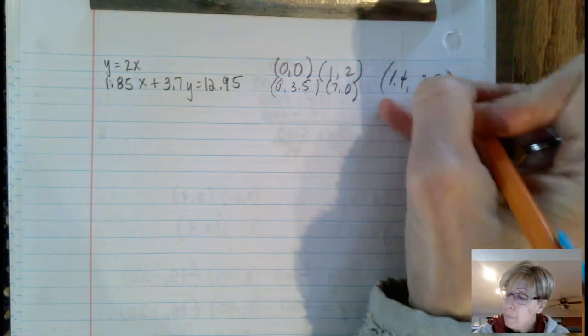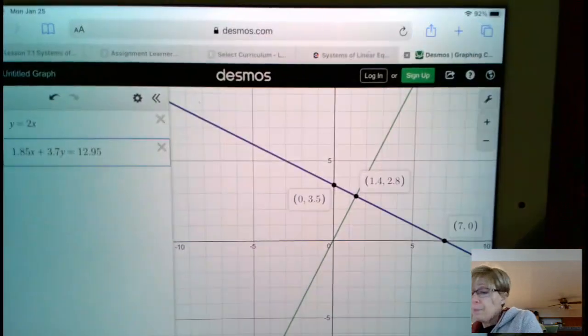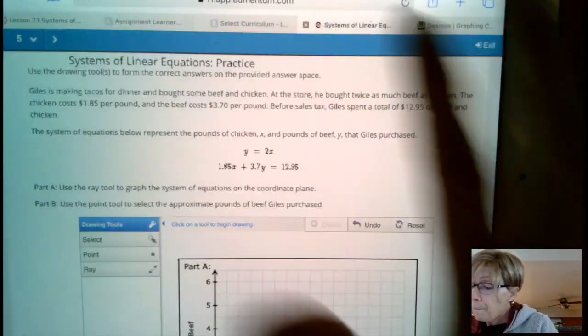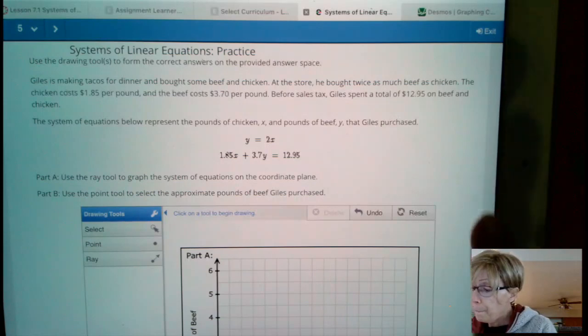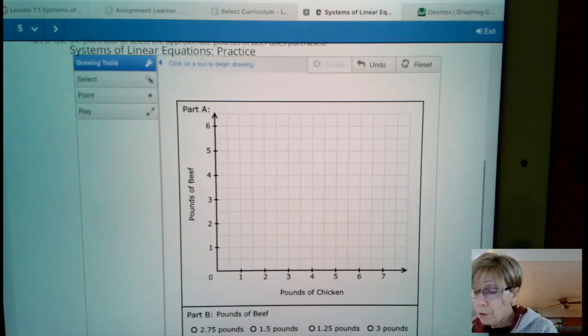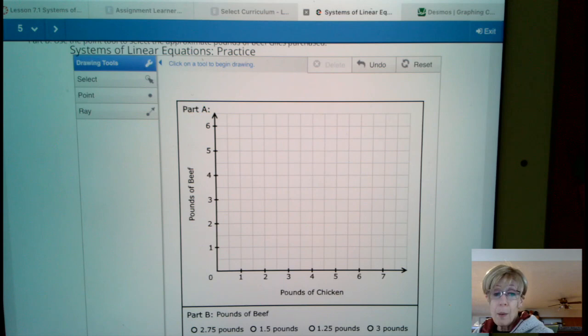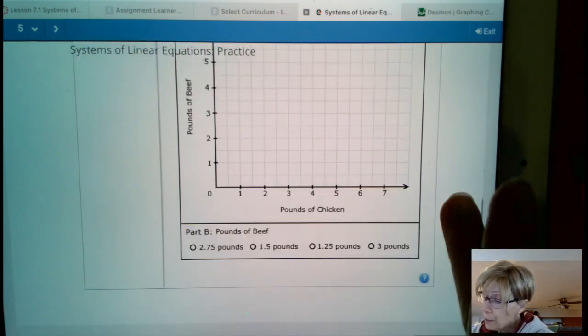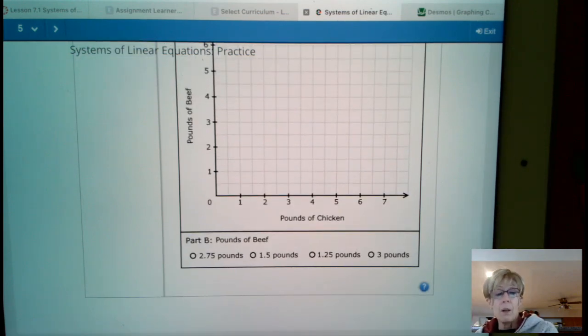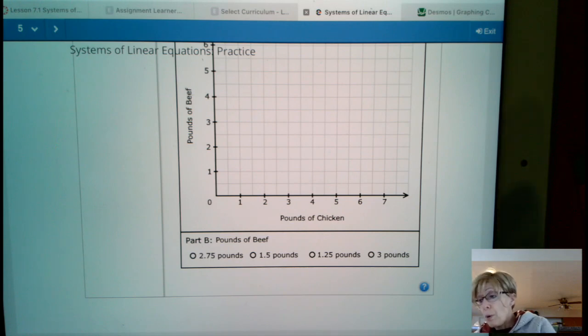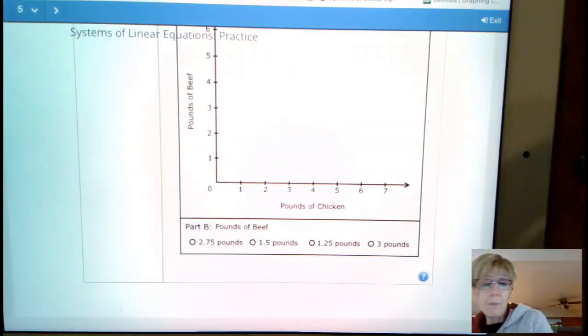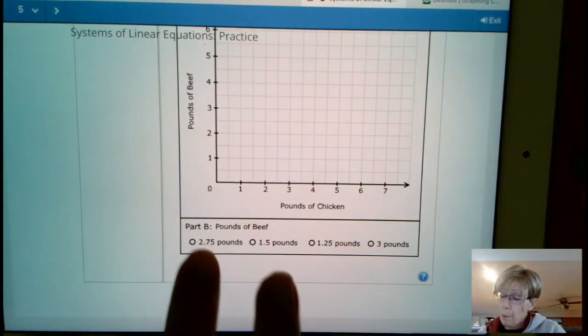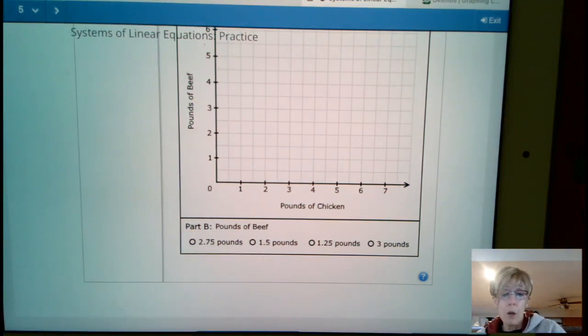And now we can go back to the program. And again, what's going to happen is that you're going to draw those in. And then at the very bottom here, and you can't see it yet, but at the very bottom here, we had, we said 2.8 pounds of beef. So I'm going to hit the 2.75, which I don't think it will let me mark because I haven't drawn in the graph yet. But 2.75 is closer to 2.8 than 3 is.